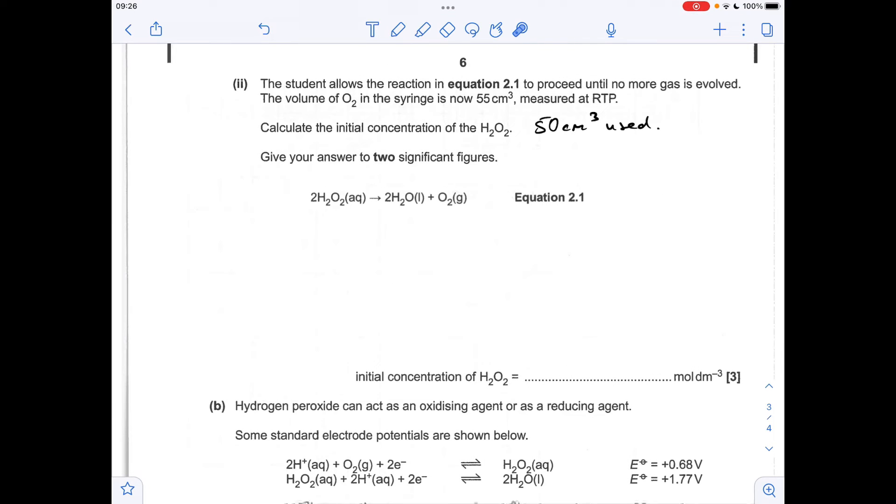Moving on to the next part, we've got to calculate the initial concentration of the hydrogen peroxide. I've just copied over the information I'm going to need. So 50 cm cubed of peroxide was used. And that's the equation for the reaction. So the first thing I'm going to do is work out how many moles of oxygen have been produced.